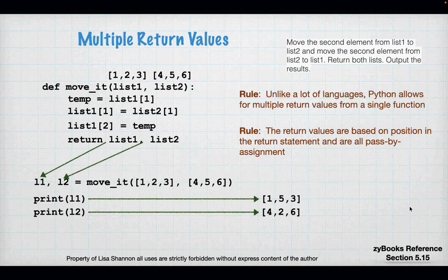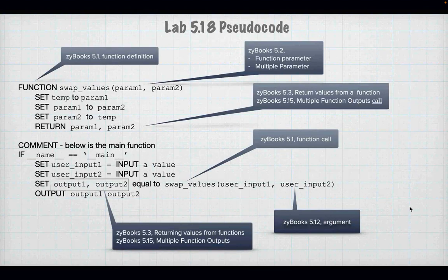Multiple return values in Python are based on position in the return statement — it's all passed by assignment. There's no link between 'list1' and 'L1' other than their position in the return and the assignment. Unlike most languages, Python allows multiple return values from a single function.